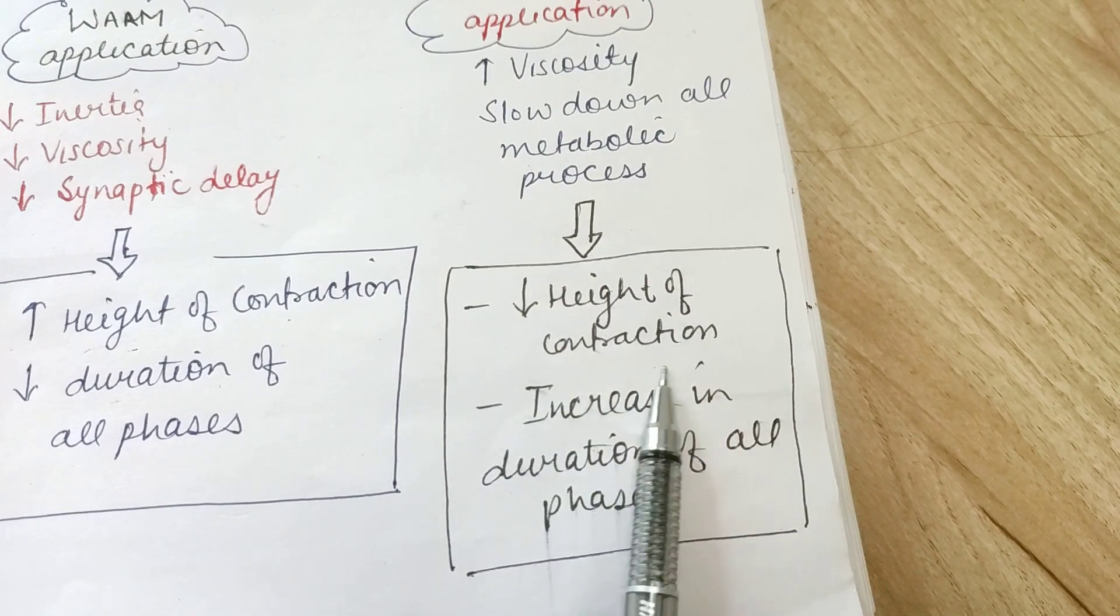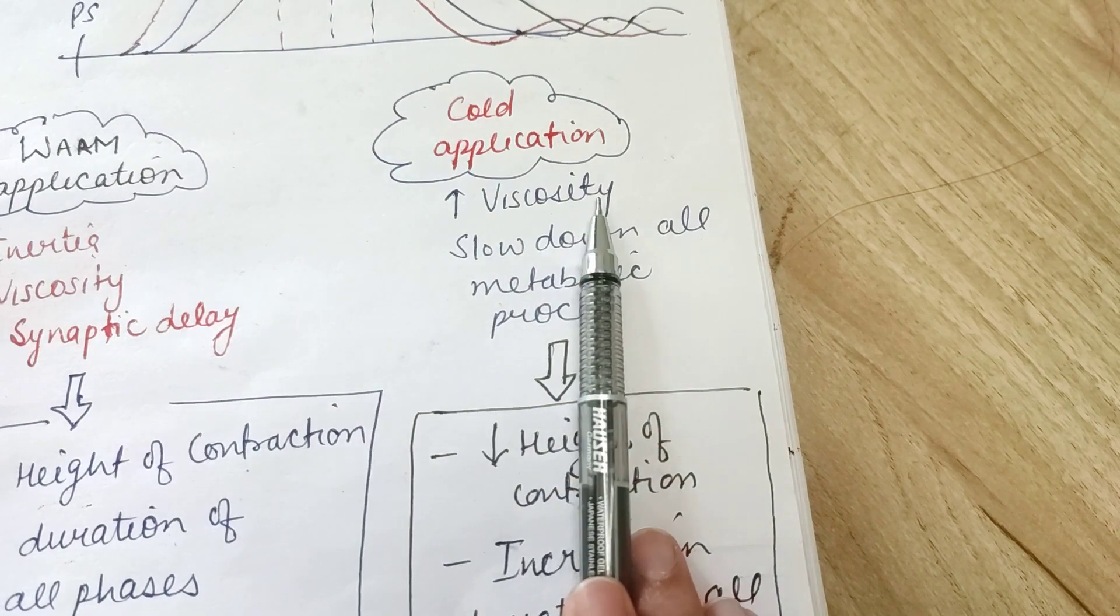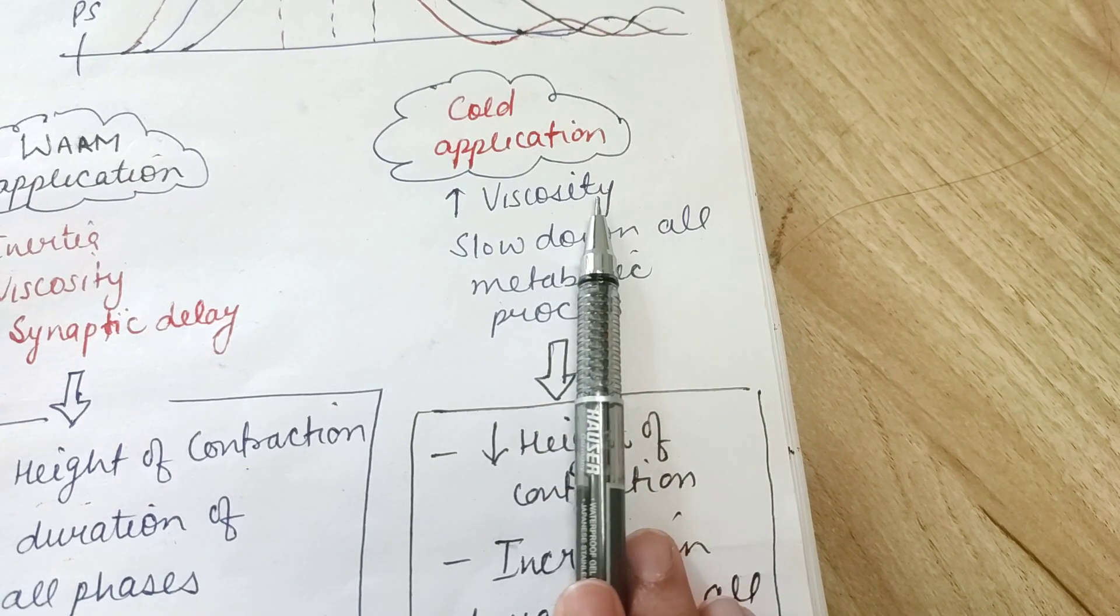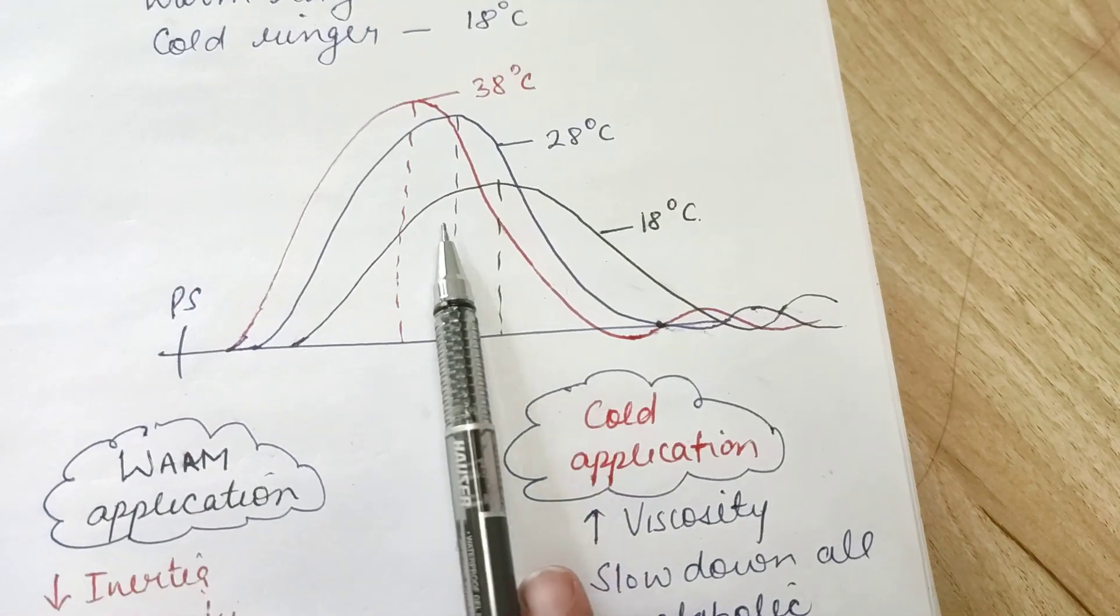The cause is there is increase in viscosity because of cold application, and all the metabolic processes slow down. Hence you can see that on cold application the graph widens, that means the duration increases and amplitude reduces.